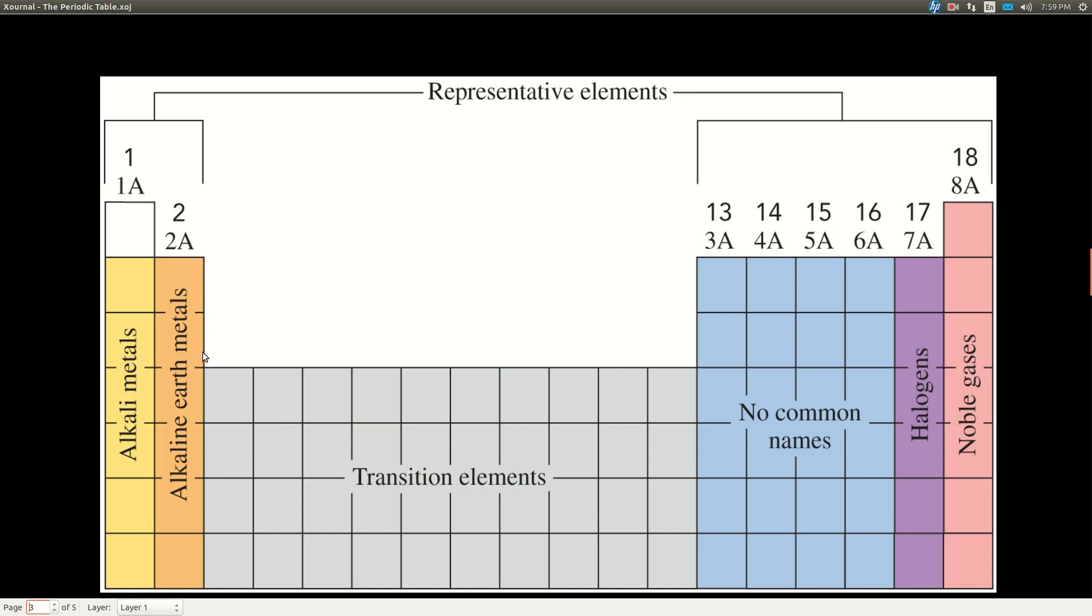The transition elements, this is this sunken block in between here, and this is the gray area in here. So there's the first column, which are called the alkali metals, then the second column, which are called the alkaline earth metals. And then we have the 10 columns that are the transition elements. And then we come back out here. There's no real common name for any of these columns until we get to the next to the last column, which are called the halogens: fluorine, chlorine, bromine, iodine, astatine. And then the noble gases: helium, neon, argon, so on.